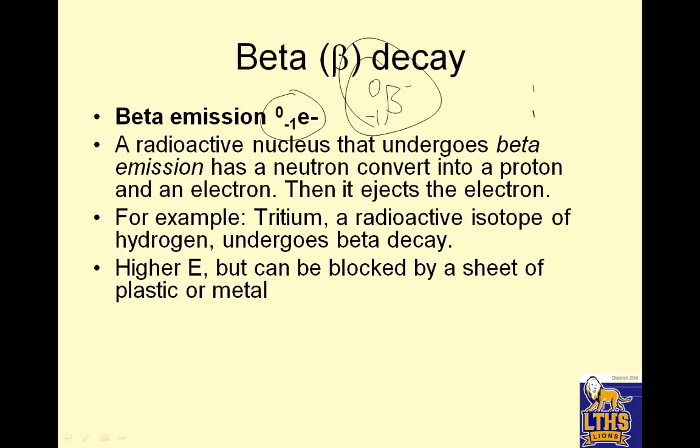For example, tritium, a radioactive isotope of hydrogen, undergoes beta decay. Tritium, if you recall, is this. And if it does beta decay, it's 0, negative 1, E, plus mass is still 3. 3 plus 0 is 3. And if this is negative 1, that means 2 minus 1 is 1. So it's helium. Okay?